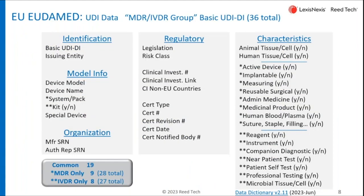We won't go into all the attributes connected to a Basic UDI-DI, but this is the list. They're grouped around some information about the model and some information about the organization — you should have received your Single Registration Number for your manufacturer by now. If you're non-European-based, you'll need an authorized representative, and that entity will also have an SRN. There are a number of fields about regulatory, and on the right-hand side you see a number of characteristics: the second grouping is appropriate for medical devices, and the third group at the bottom is for in vitro diagnostics. All those values would have to be the same for every device inside that medical device Basic UDI-DI.